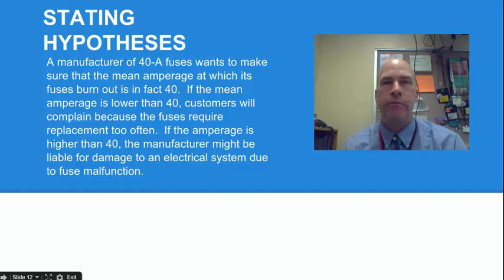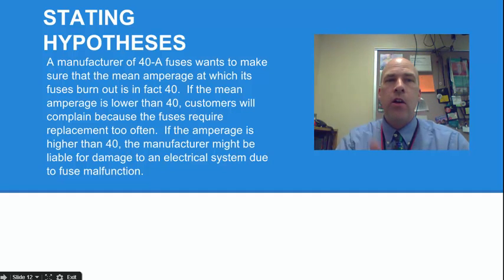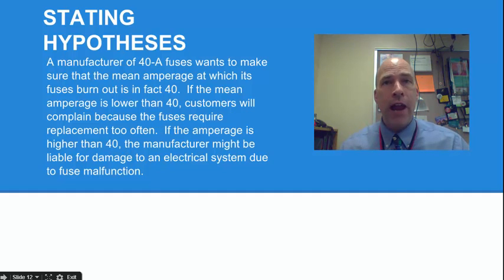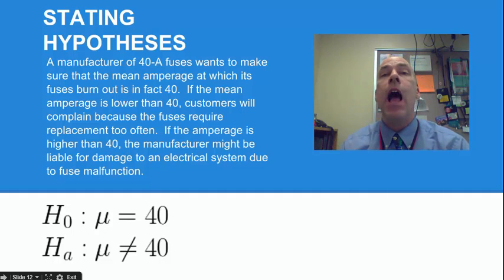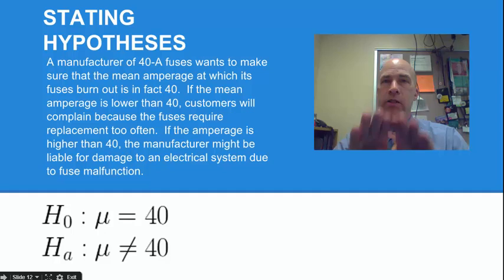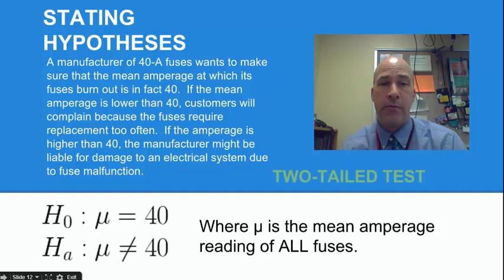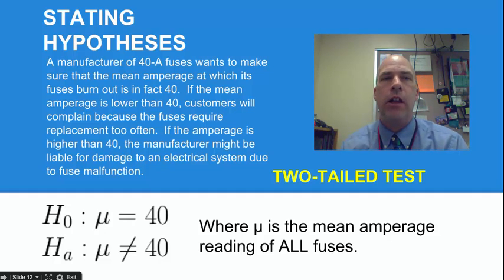But here's something that's not one-tailed. The fuses are supposed to be 40 amps. If they go greater or less than 40 — either direction — we have a problem. I just want evidence that we get away from 40. So the null hypothesis is that the mean is 40 versus the alternative that the mean is something other than 40. With a normal curve, this gives two tails — hence this is called a two-tailed test. We call mu the mean average reading for all fuses.